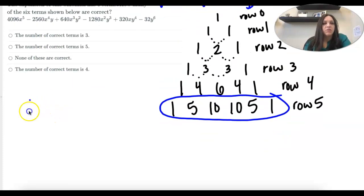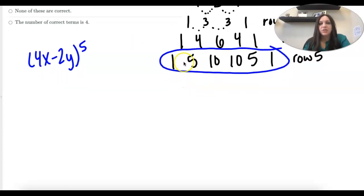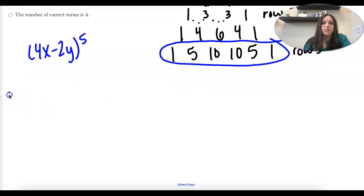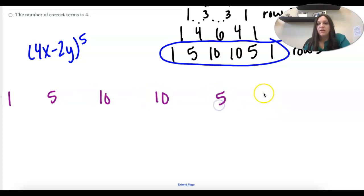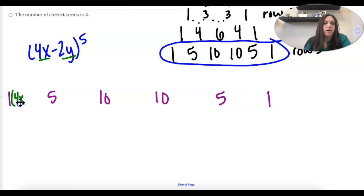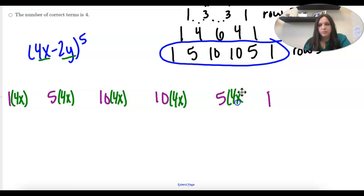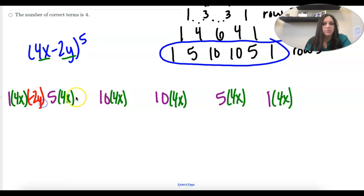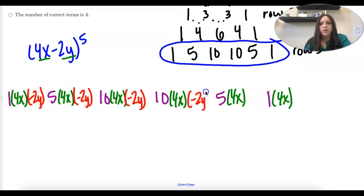So I'm expanding 4x minus 2y to the fifth. These take a lot of space, so first thing, you're going to write these coefficients out with a lot of space in between: 1, 5, 10, 10, 5, 1. And then I'm going to write 4x and negative 2y next to all of those numbers.